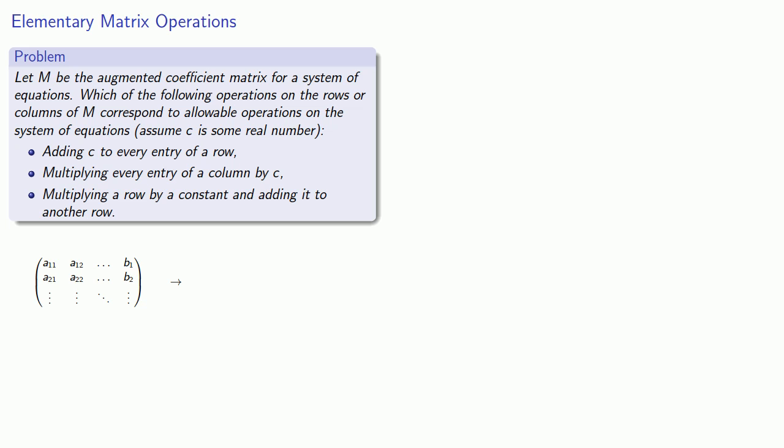Finally, how about multiplying a row by a constant and adding it to another row? If we multiply every term of a row by a constant, that's just like multiplying an equation by a constant, and we're allowed to do that.